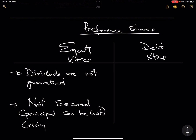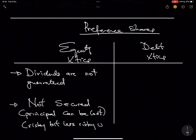Please take note: preference shares are ranked higher than equity. So they are risky, but less risky when you compare to ordinary equity. When we look at equity, what we are talking about is ordinary shares — that is ordinary equity.